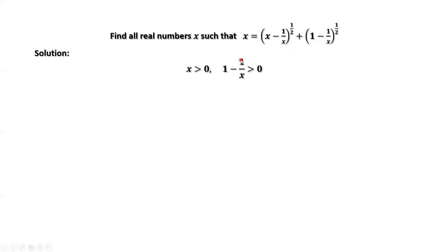1 minus 1 over x is inside the root sign, therefore it must be bigger than or equal to 0. If it equals 0, then x equals 1, making both square root terms 0, but the left-hand side would be 1 — so that's not true. x cannot be 1. Therefore, x is bigger than 1.